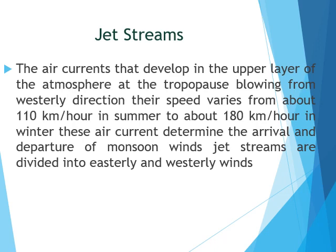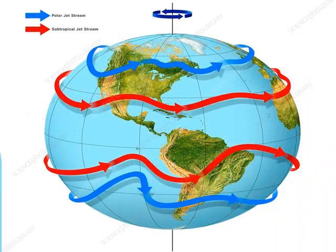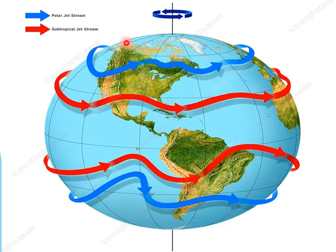Jet streams are divided into two parts: easterly and westerly jet streams. They blow west to east all across the globe when warm air masses meet cold air masses in the atmosphere. Air masses have different temperatures because the sun does not heat the earth evenly — areas near the equator are hot, poles are cold. Warm air rises up and polar air sinks down to replace it, causing polar and subtropical jet streams.